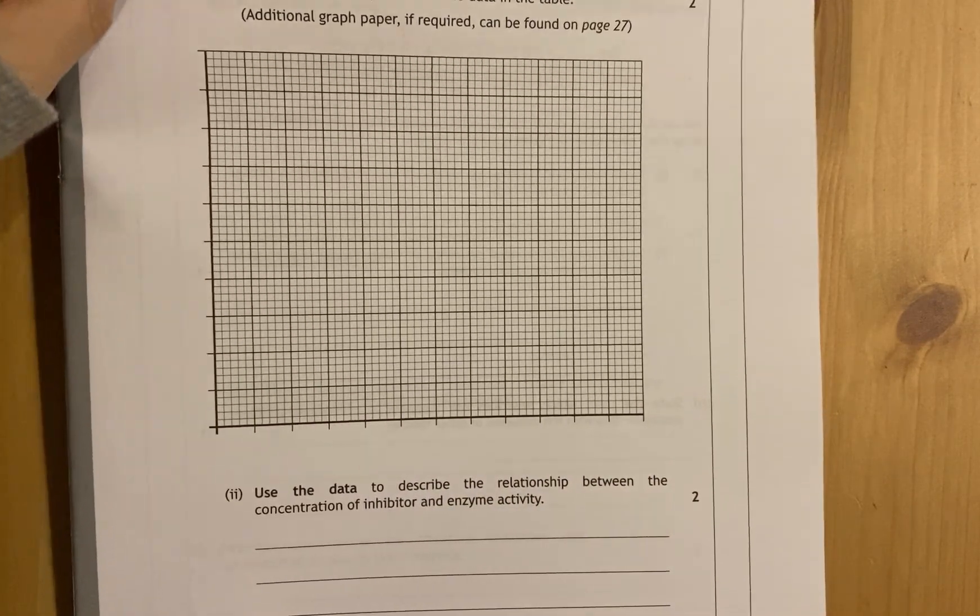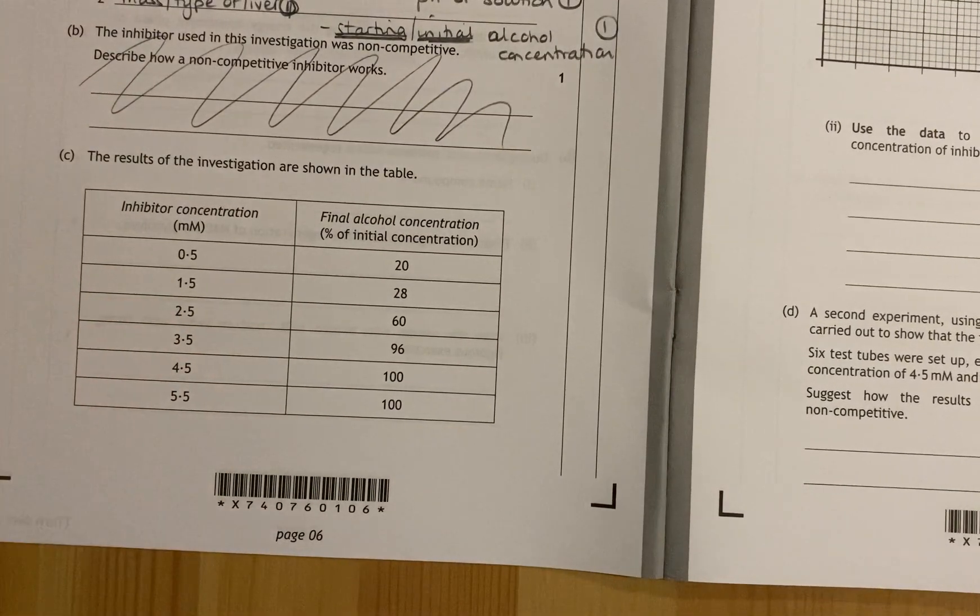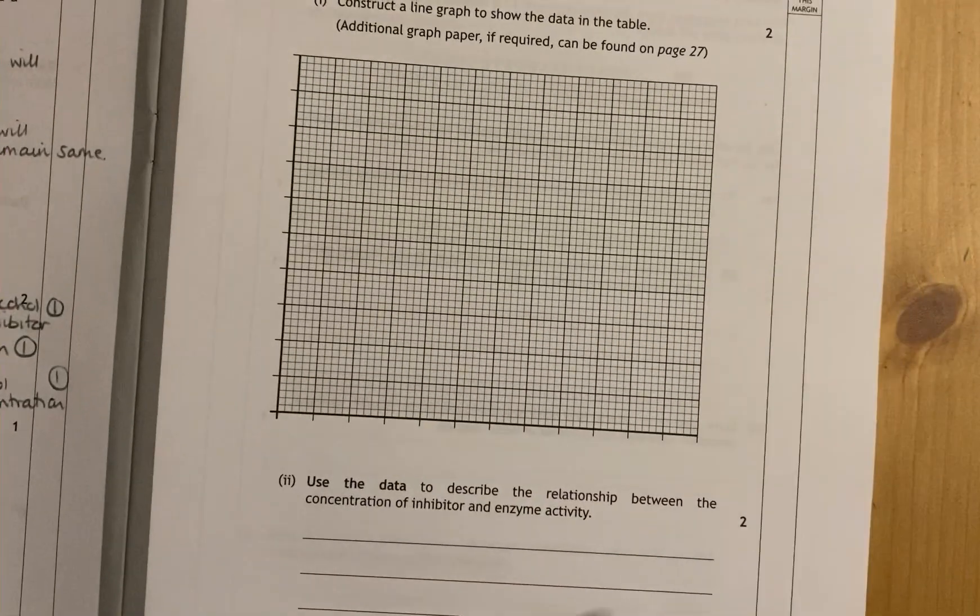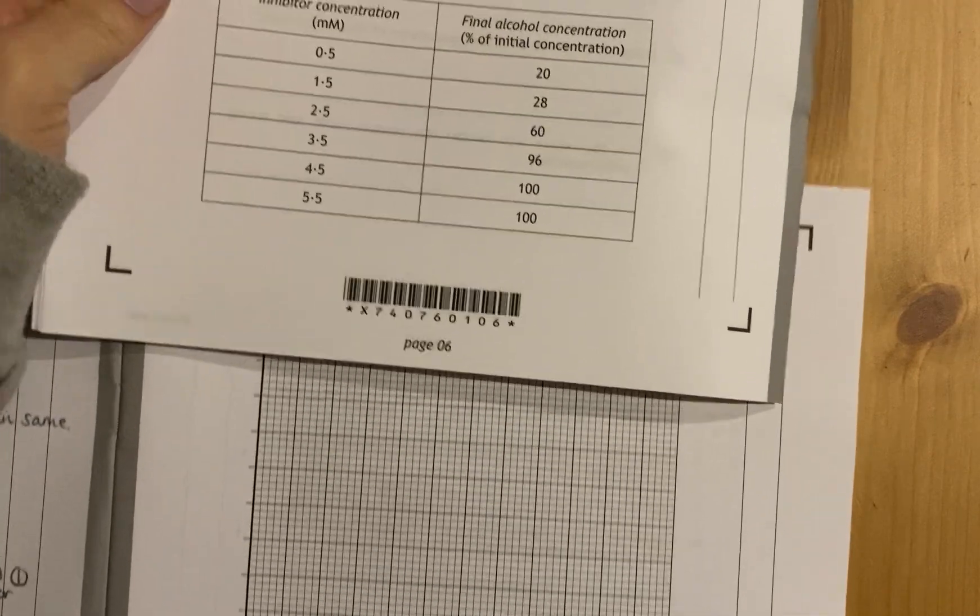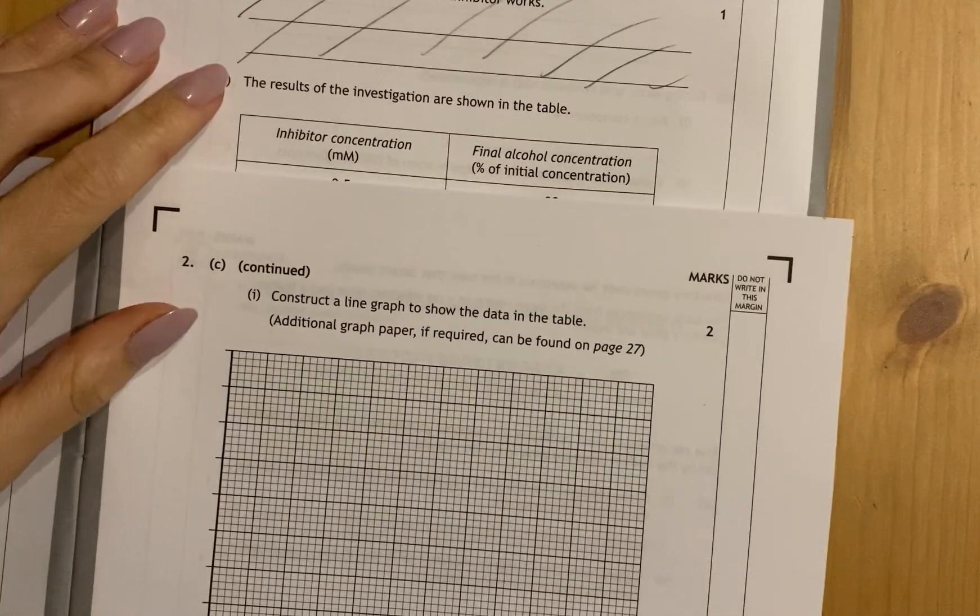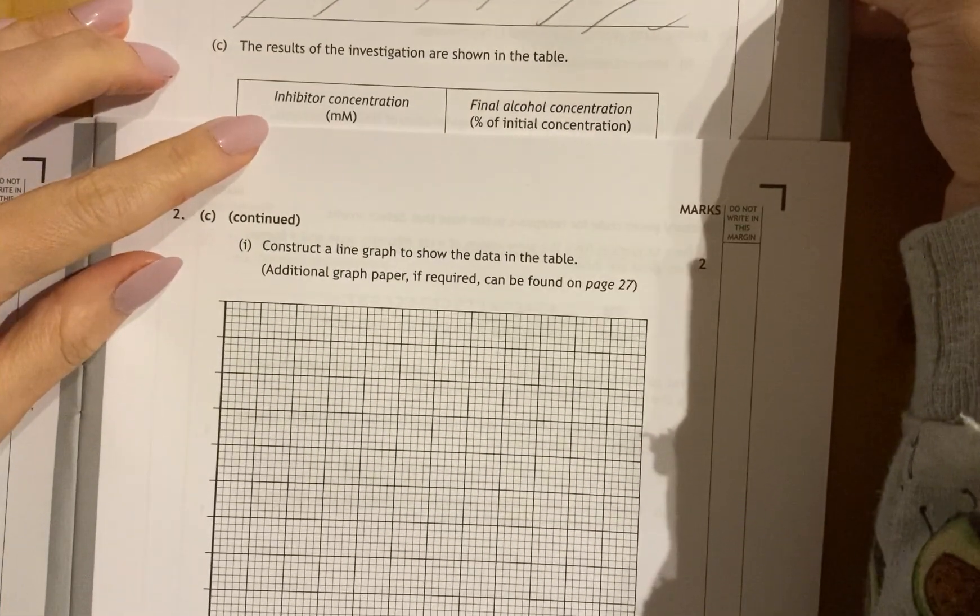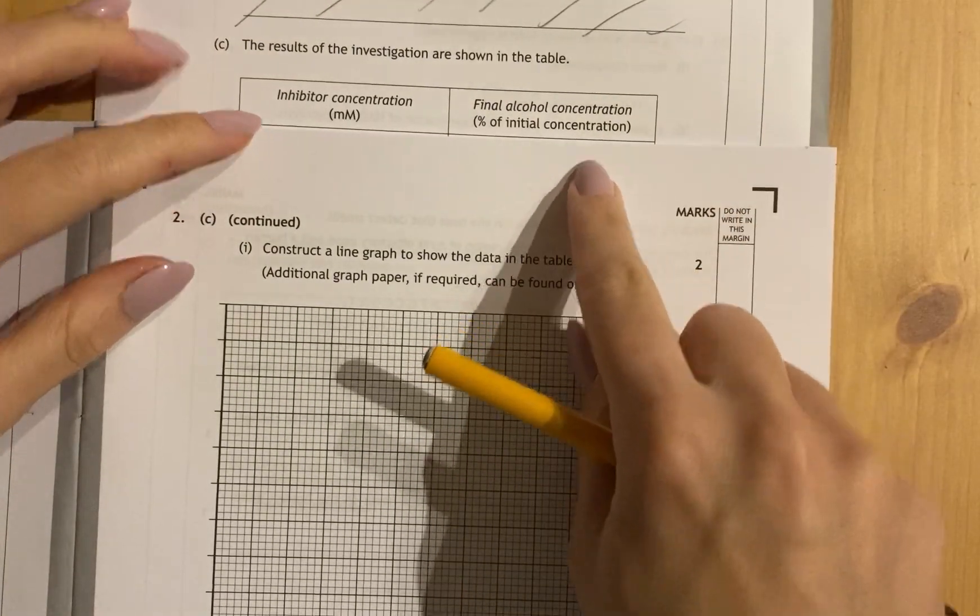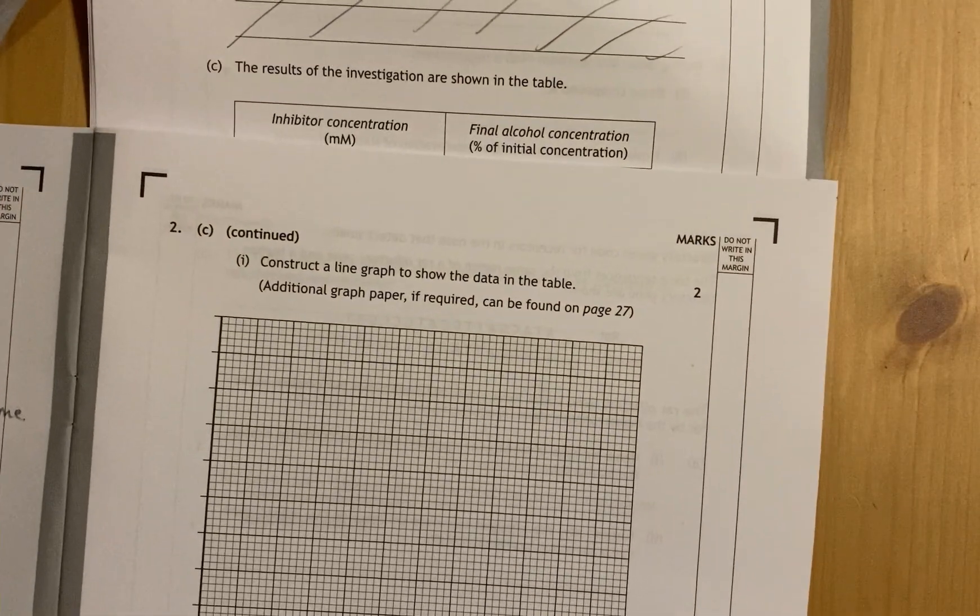So again we have a y-axis at the side and an x-axis along the bottom. So whatever they are changing, whatever's on the left-hand side of the table here, goes along the bottom of the graph. So fortunately enough I've got another example of this, so I can just move this over a bit to show it's here. So inhibitor concentration is in millimoles, and our final alcohol concentration, percentage of initial concentration, is then up the side. That would be our y-axis.